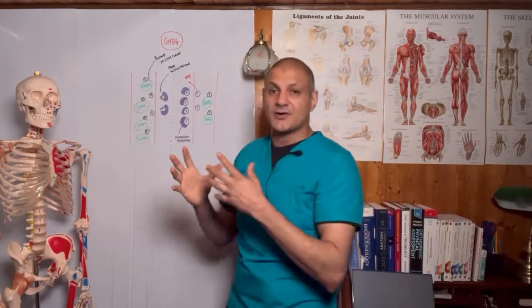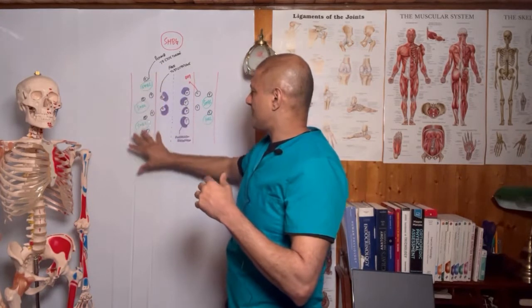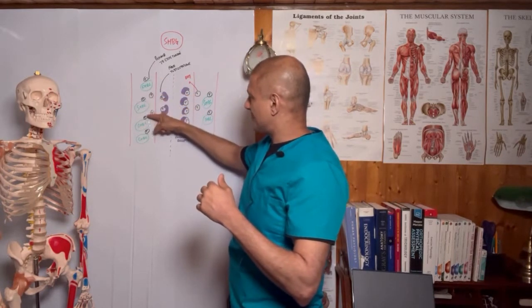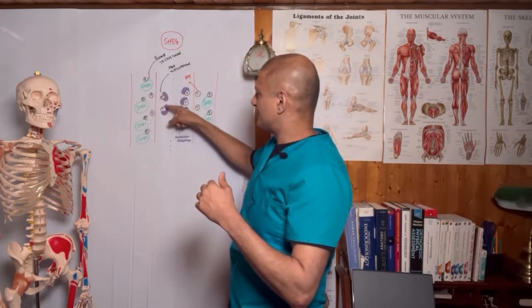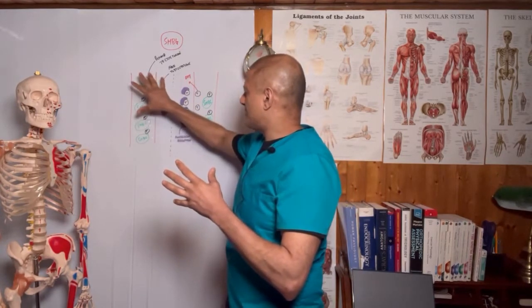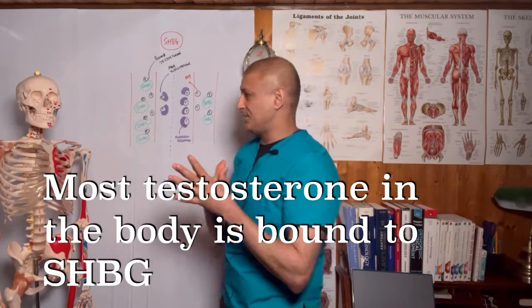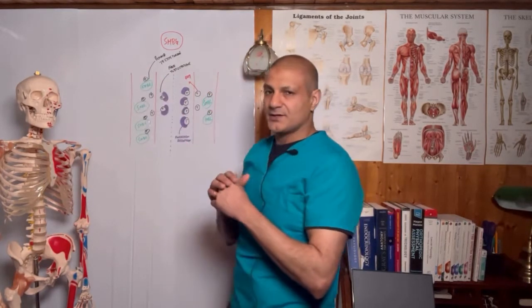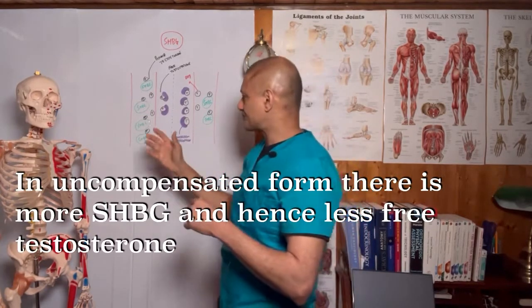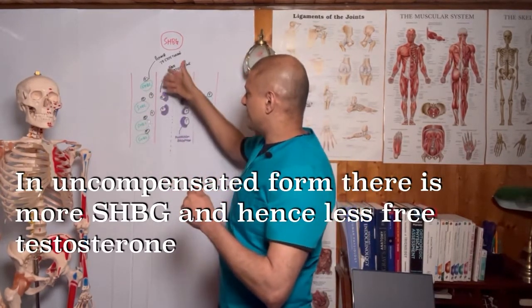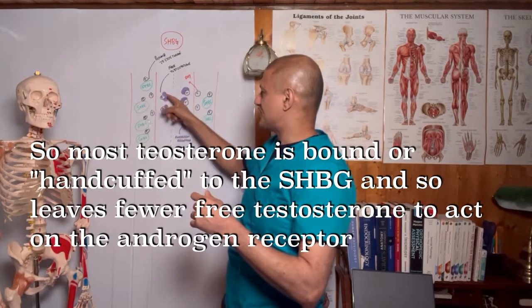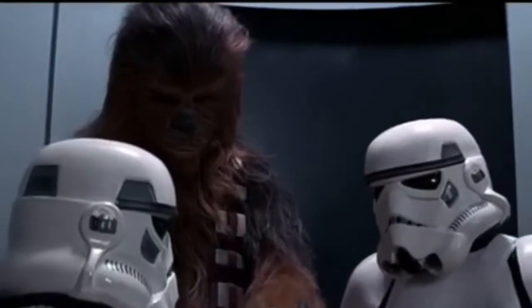Let's look at this diagram. Here we have a scenario with a lot of SHBG bound to testosterone, and only some free testosterone floating around. The predominant amount of testosterone is bound to SHBG. To simplify: we've got the same number of testosterone molecules on both sides, but this is the uncompensated form — a lot of SHBG, very little free testosterone making its way to the androgen receptor.